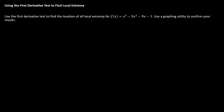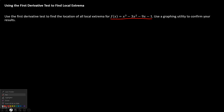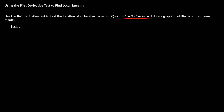Let's use the first derivative test to find the location of all local extrema for the function f(x) = x³ − 3x² − 9x − 1. The first thing we're going to do is find our critical points, which means we take the derivative and set it equal to zero.